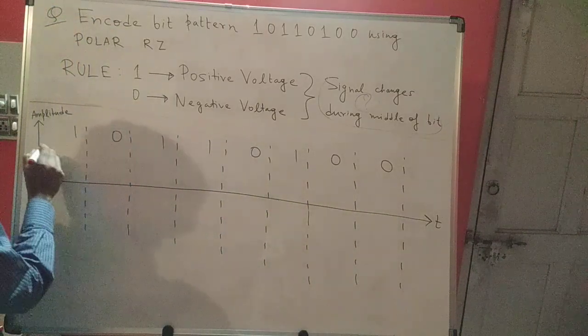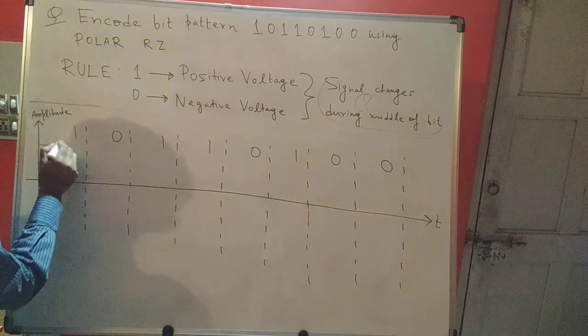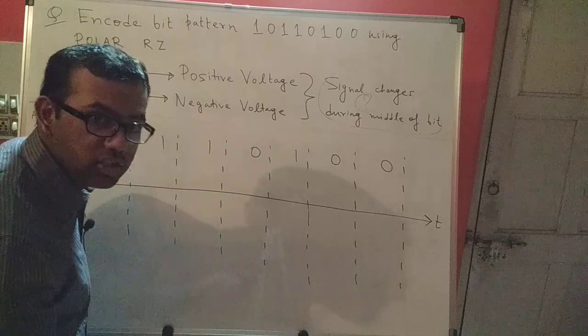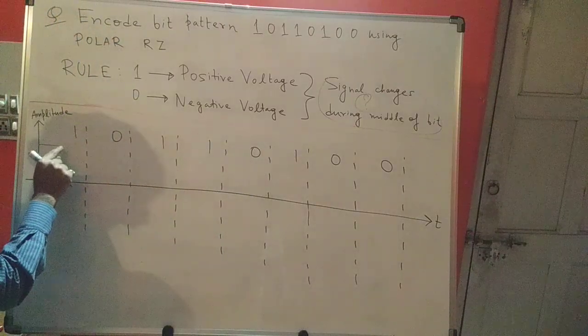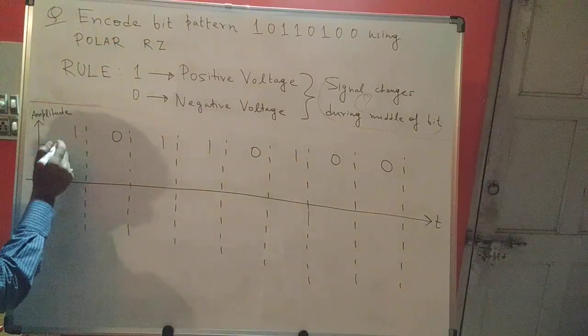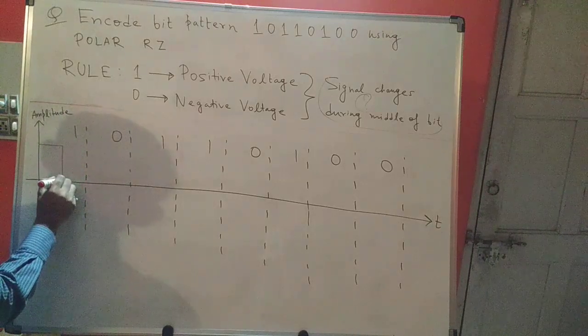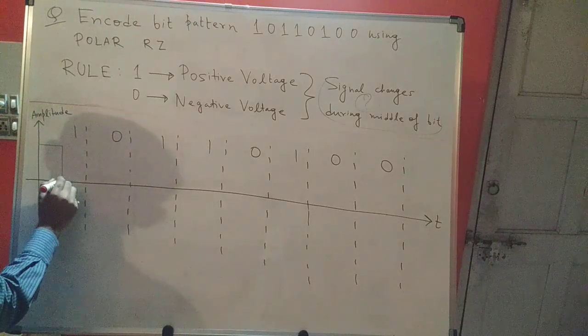So when you find a 1 you're here above the time axis representing a positive voltage. But the thing is the signal needs to change during the middle of the bit. So let's say this is the middle of the bit. I'm here. I'm at the middle of the bit now. So I need to change my signal. So I go down and I change and I stay here.